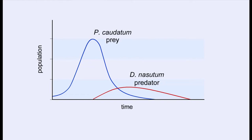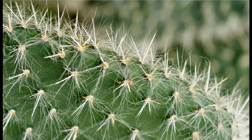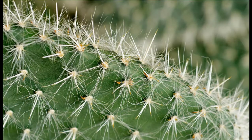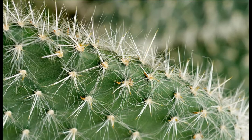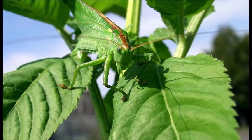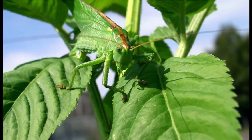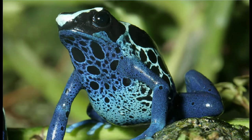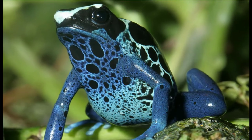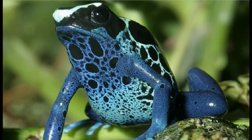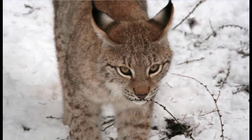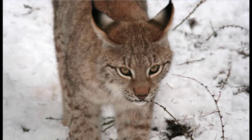Prey species have adaptations that limit predation by making the predator's job more difficult. Some examples are plants that are distasteful or difficult to eat, protective coloration allowing prey to hide, and prey with toxins and bright colors to warn away predators.